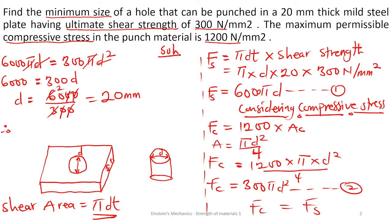Therefore, the minimum size that can be used to punch a hole in this mild steel is a diameter of 20 mm. The key is to consider the ultimate shear to find the force, then consider the compressive stress to find the force — the tricky part is using the correct area for shear versus compressive stress. I hope you get it. Check out the next episode.